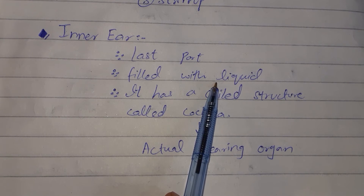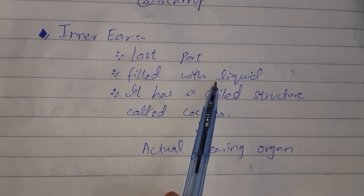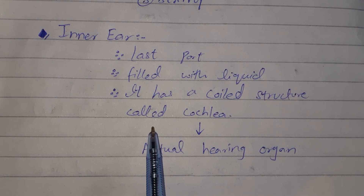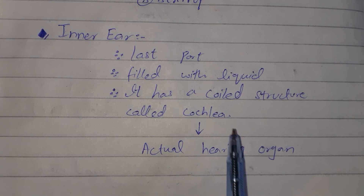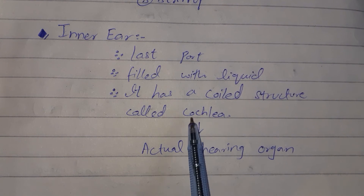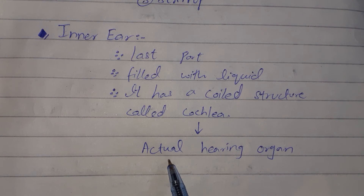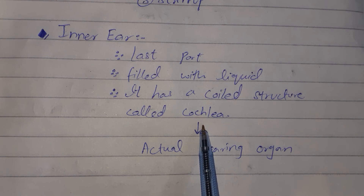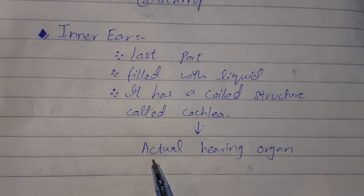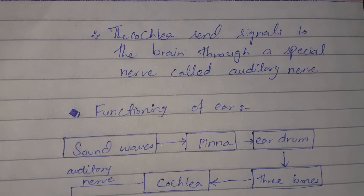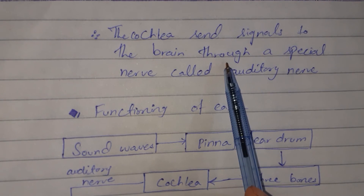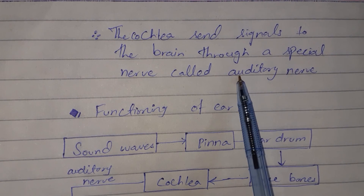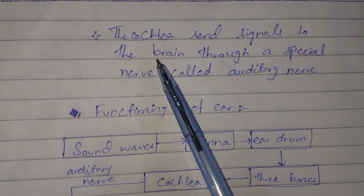The eardrum is in the middle ear, which has three bones. Then it leads to the inner ear, which has a coil structure called the cochlea. The cochlea is the actual hearing organ. The cochlea sends signals to the brain through a special nerve called the auditory nerve.